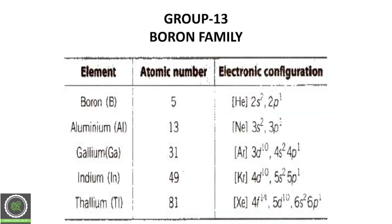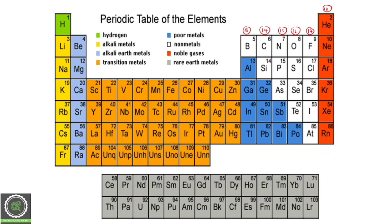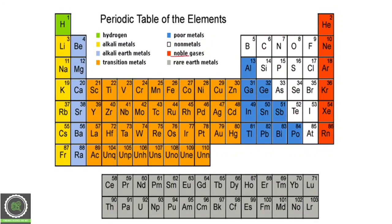Group 13 elements are called the boron family. Looking at the periodic table, the blue-colored elements are metals — poor metals — including aluminium and gallium. The white-colored elements are non-metals. The red-colored elements are noble gases, which form the 18th group. The 17th group is halogens. So these are all your P-block elements.